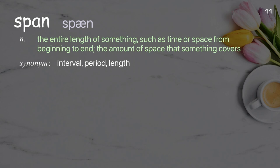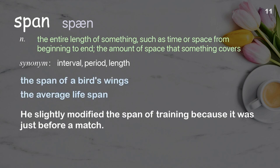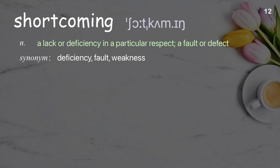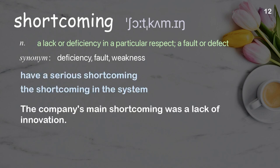Span: The entire length of something. Shortcoming: A lack or deficiency in a particular respect; a fault or defect. Examples: Have a serious shortcoming. The shortcoming in the system. The company's main shortcoming was a lack of innovation.